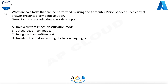Question 85: What are two tasks that can be performed by using the computer vision service? Each correct answer presents a complete solution. Note, each correct selection is worth one point. A. Train a custom image classification model. B. Detect faces in an image. C. Recognize handwritten text. D. Translate the text in an image between languages.